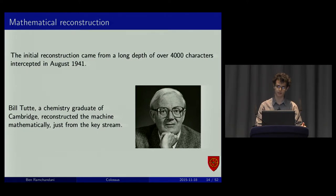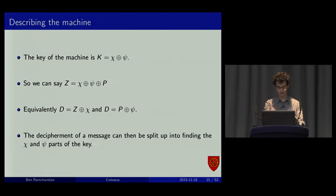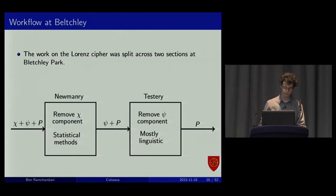A man called John Tiltman took this message, recovered both the plaintexts and therefore the key stream. It was Bill Tutte, Cambridge graduate, reconstructed the machine mathematically. He was the one that named the chi and psi. This would be like the characteristic equation. Z, the ciphertext. It's chi, XOR the psi, XOR the plaintext. Otherwise, you can split it up into two parts. You can just say pseudo plaintext is the ciphertext with the chi component removed, which is the same as the plaintext with the psi component added. And you can split up the decipherment.